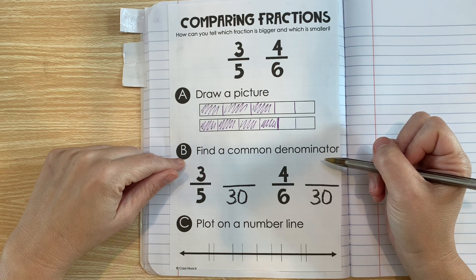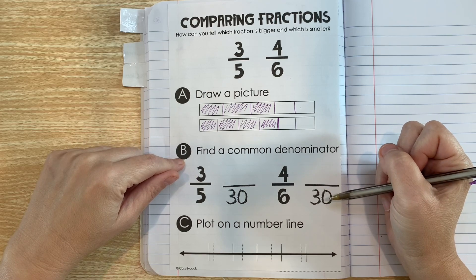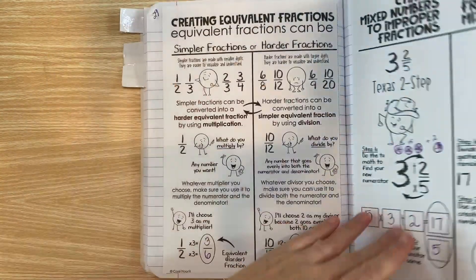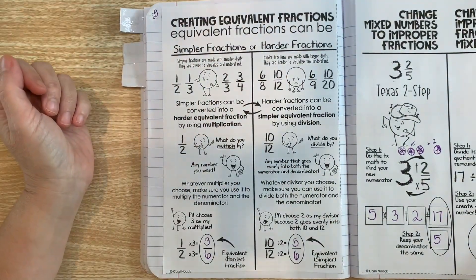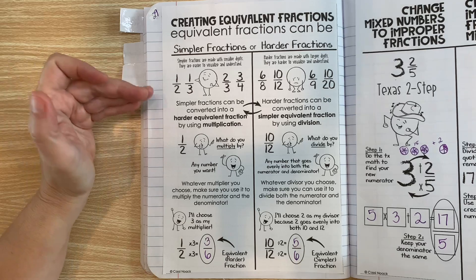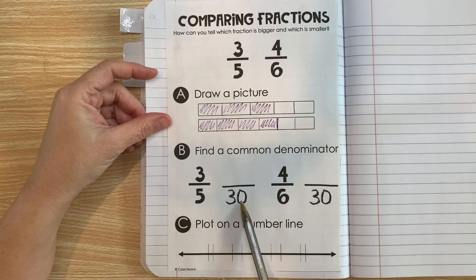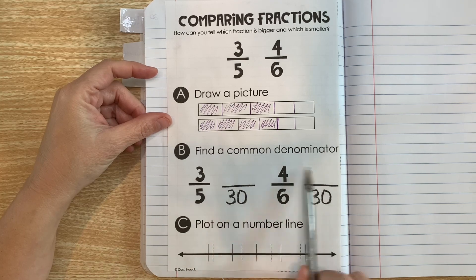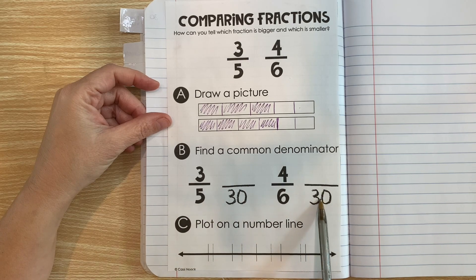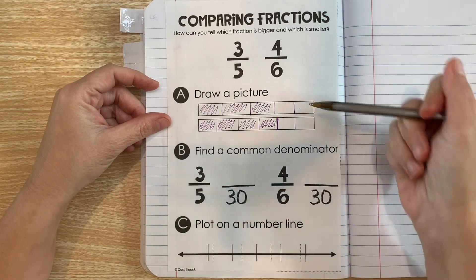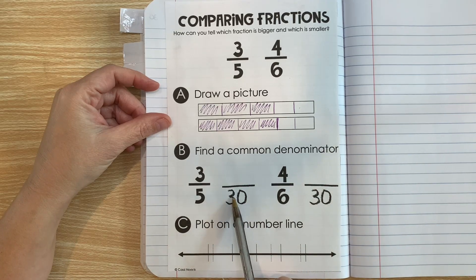Okay, so now let's look at another strategy. For B, we're going to create an equivalent fraction with a new denominator and then compare the numerators. Do you remember when we talked about creating simpler fractions and harder fractions that are equivalent? Well, this is why we learned that. If we have two fractions that have the same denominator, then all we have to do is compare the numerator.